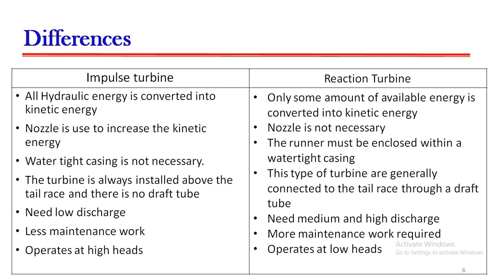Impulse turbines need low heads, whereas reaction turbines need medium and high heads. Less maintenance work is required in impulse turbine, while more maintenance work is required in reaction turbine. Impulse turbines operate at high heads, whereas reaction turbines can operate at low heads.